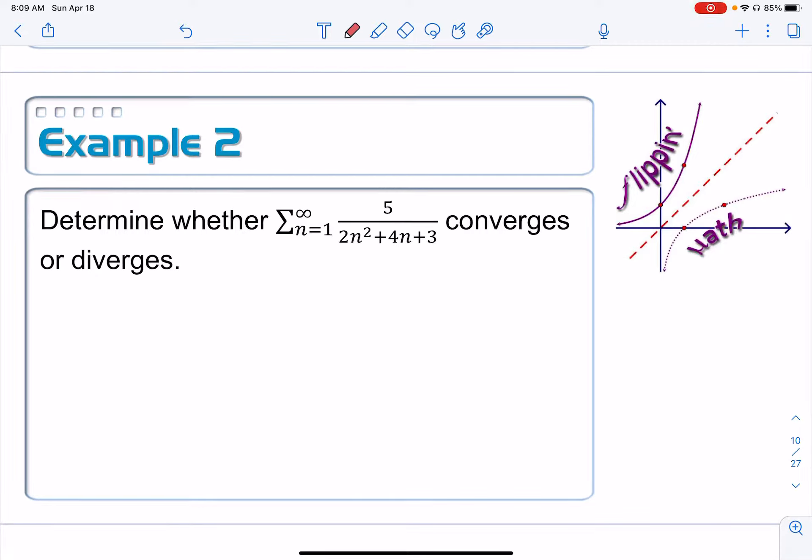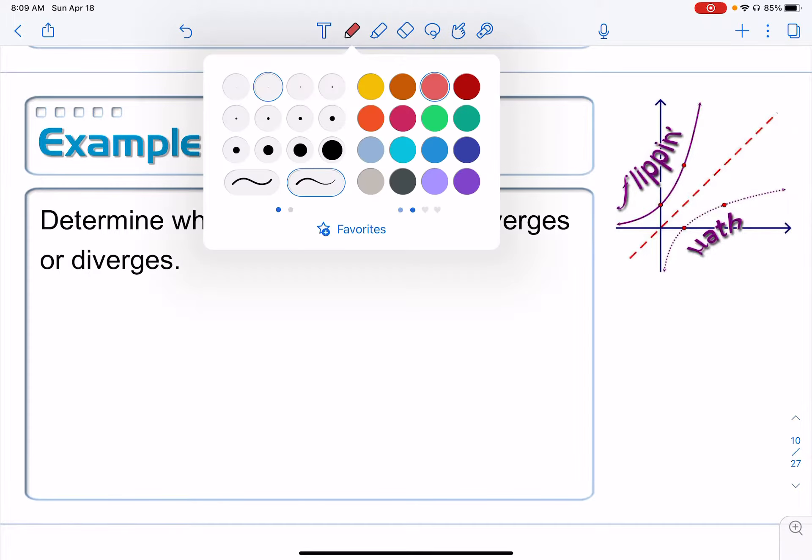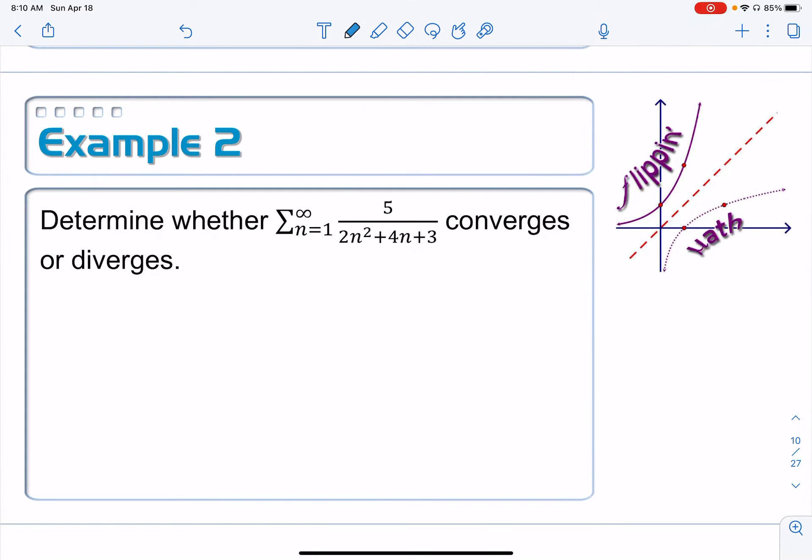Alright, so let's take a look at a number of examples with the direct comparison test here. Determine whether this series converges or diverges. You make sure your terms are positive. I'm starting at 1, everything is being squared, added together, divided into 5. This is positive. We're good to go.